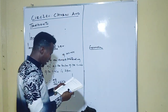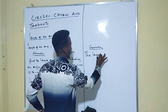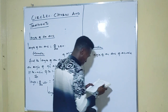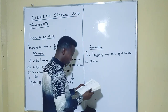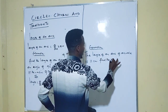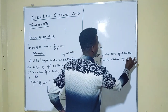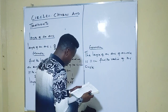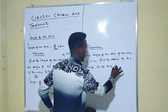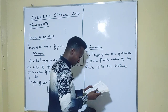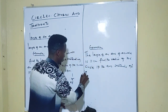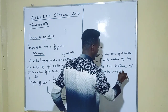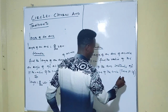Example 2: The length of an arc of a circle is 11 centimeters. Find the radius of this circle if the arc subtends 90 degrees at the center of the circle. Take π equal to 22/7.